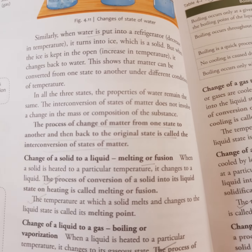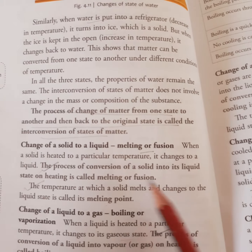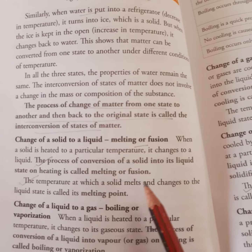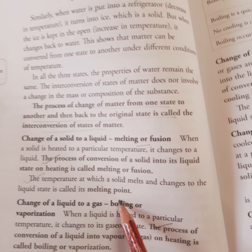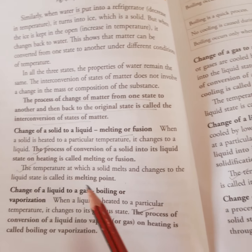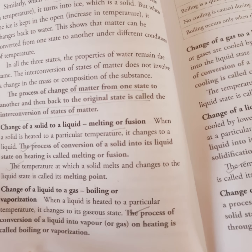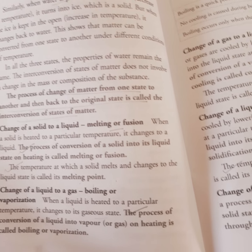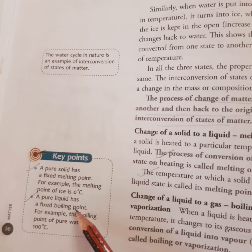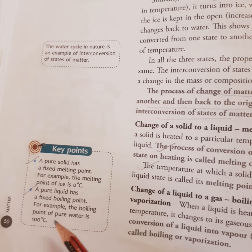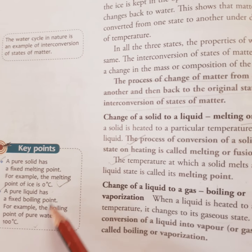Change of a solid to a liquid is called melting or fusion. The process of conversion of solid into liquid on heating is called melting or fusion. The temperature at which a solid melts is called its melting point. A pure solid has a fixed melting point — for example, the melting point of ice is 0°C. A pure liquid has a fixed boiling point — for example, the boiling point of pure water is 100°C.